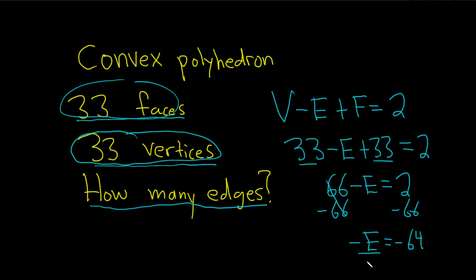So to finish, we can just divide by negative 1. That's going to give us E equals 64, so there are 64 edges. I hope this video has been helpful.